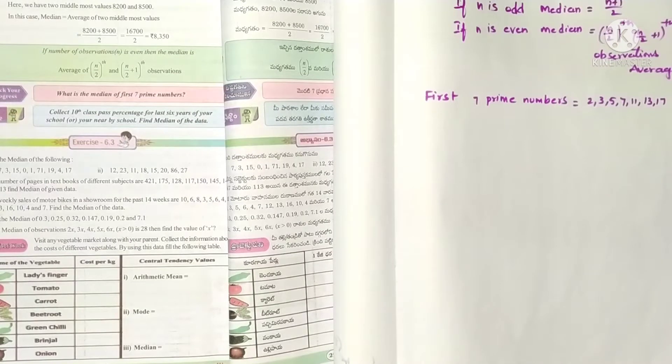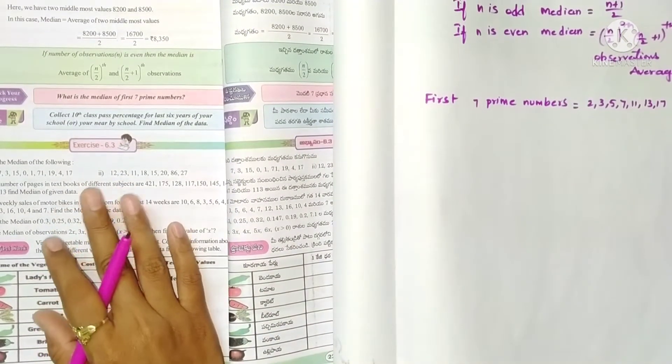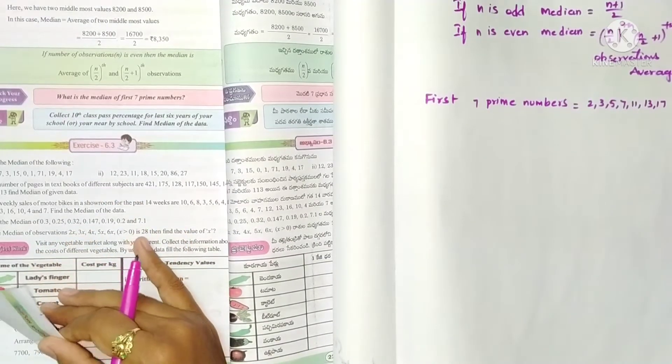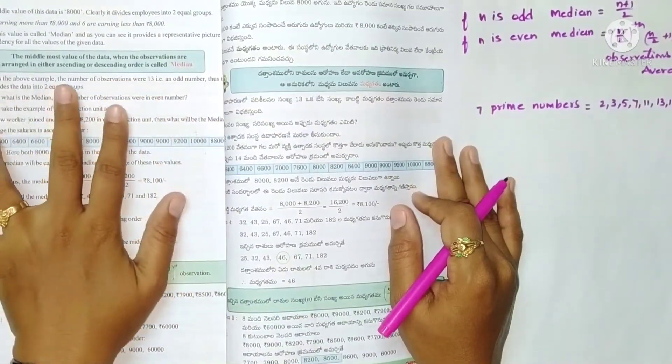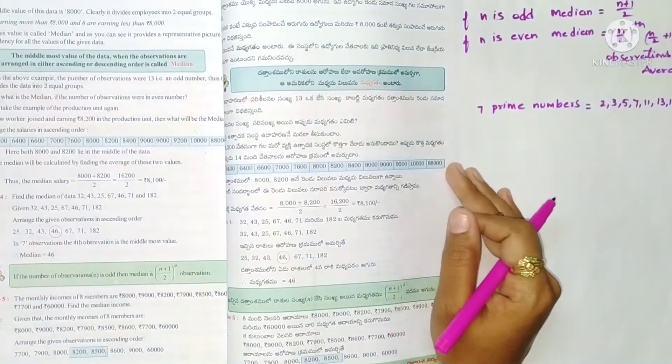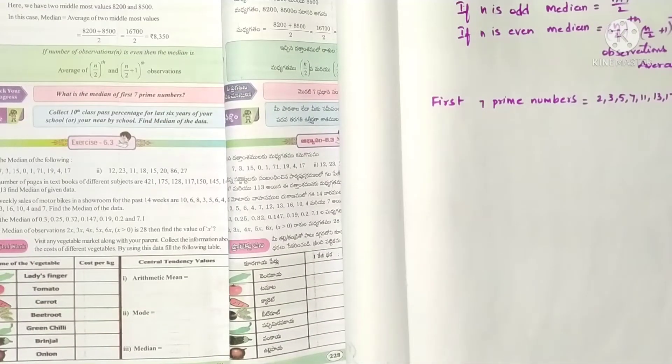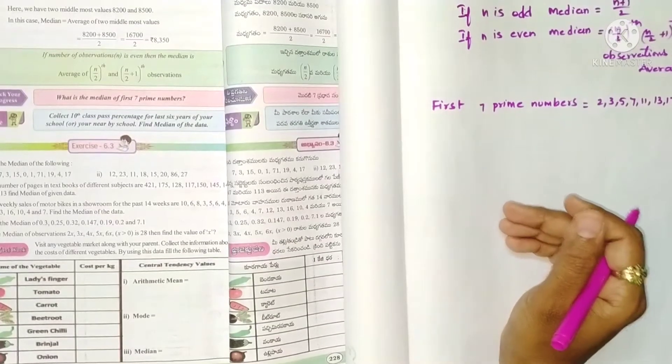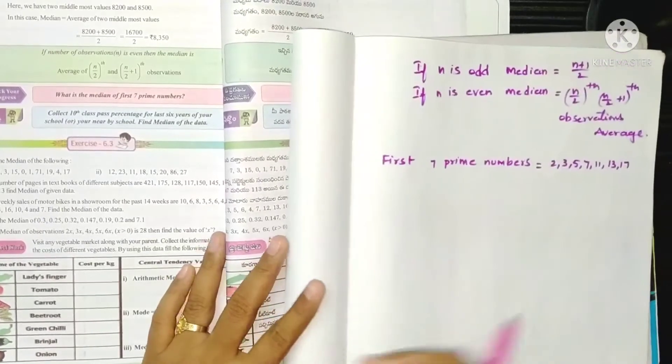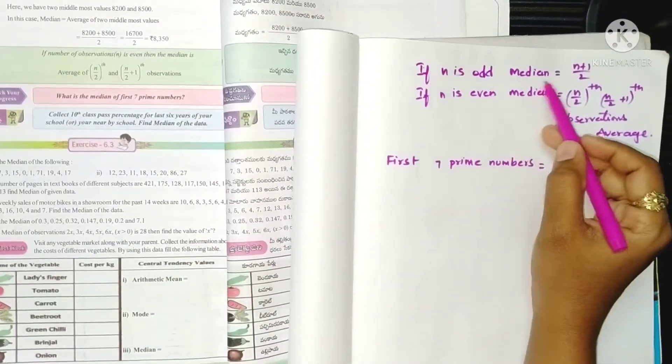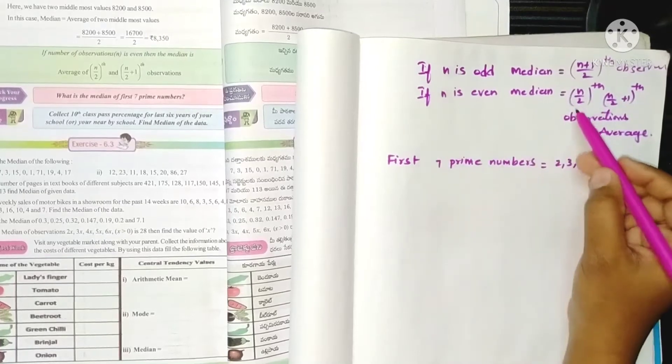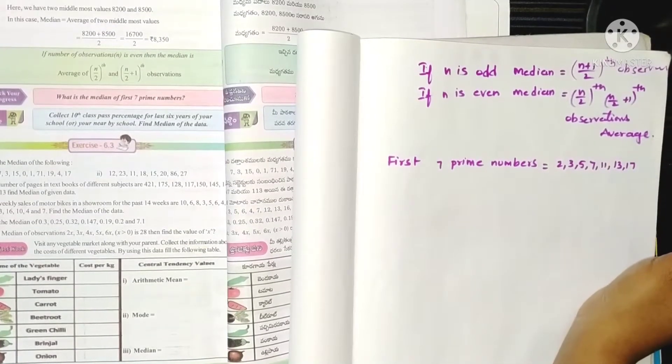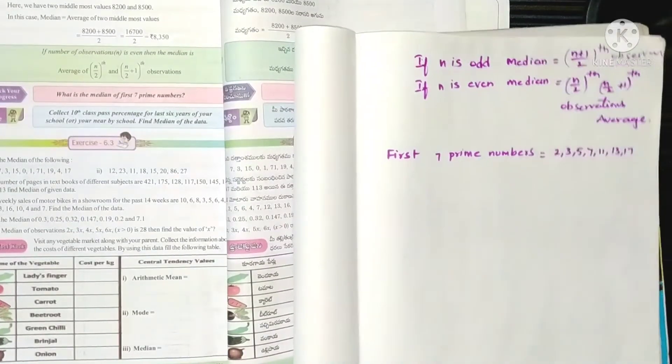Hello students, welcome to my channel. Today in this video we are going to see Exercise 6.3 problems. All these problems are based on the concept of median. What is median? The middlemost value of the data when the observations are arranged in either ascending or descending order is called its median. The formula: if n is odd, median is (n+1)/2th observation. If n is even, average of n/2th and (n/2+1)th observations.